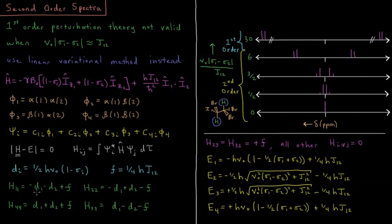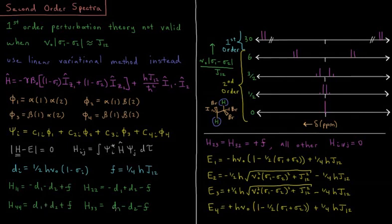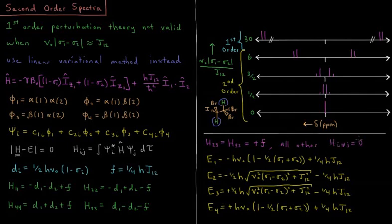The other factor is that for H₂₃ and H₃₂ in our Hamiltonian matrix, each of those is coupled with the coupling constant — one-fourth h times J₁₂ — and all the other off-diagonal elements in the Hamiltonian matrix are equal to zero.